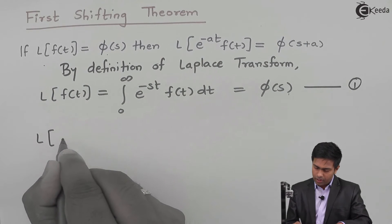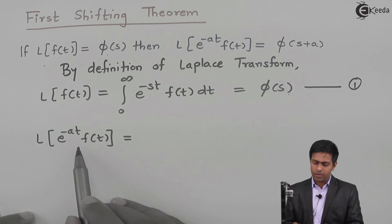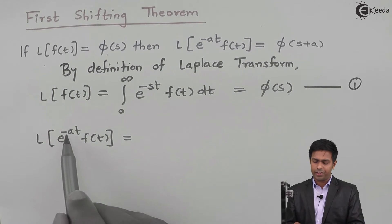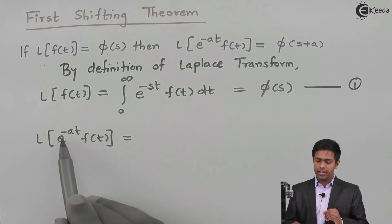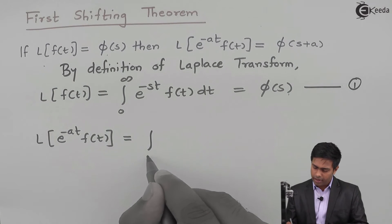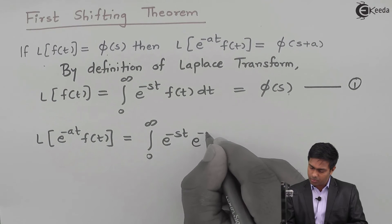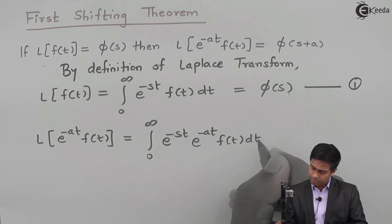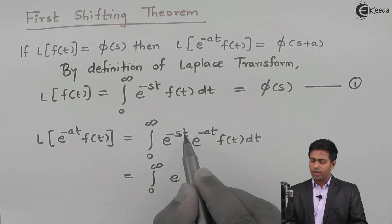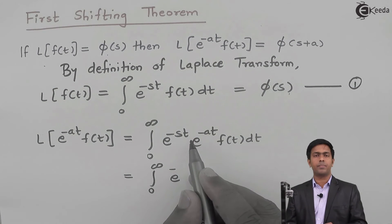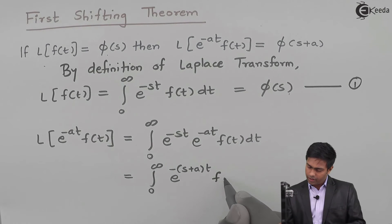Now let's use this definition for the derivation. We have the term: Laplace of e raised to minus at times f(t). If you compare this with the definition, here instead of f(t) we have e raised to minus at times f(t) as our function. So in the integration, instead of f(t) I will replace it with e raised to minus at into f(t). This gives integration from 0 to infinity, and these two exponential terms combine — the powers add — so we get e raised to minus (s+a)t into f(t) dt.